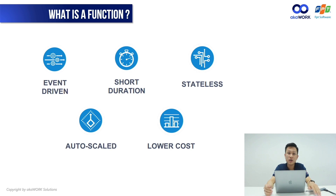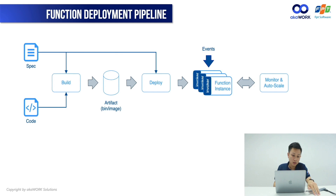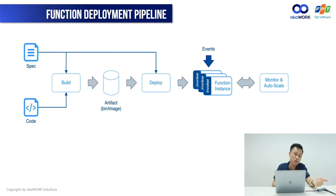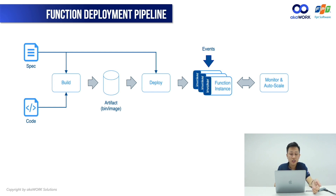In the next part, I will talk about the function deployment pipeline and lifecycle. The lifecycle of the function begins with writing the code, and you need an additional specification file to contain the configuration information for deployment. Then a builder entity will take the code, specification, and commands and turn them into an artifact such as a binary, package, or container image. Then the artifact will be deployed on a cluster where a controller entity is responsible for adjusting the number of function instances based on event triggers, event traffic, or load.